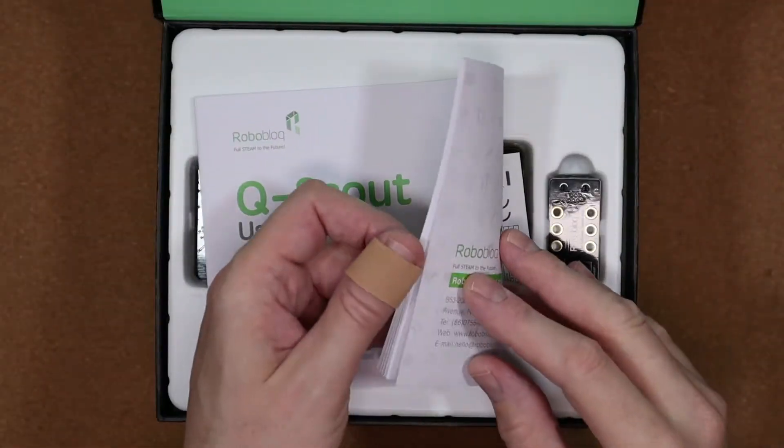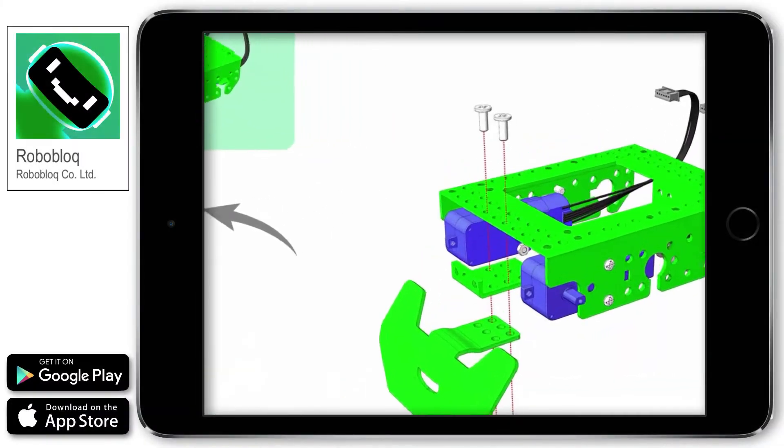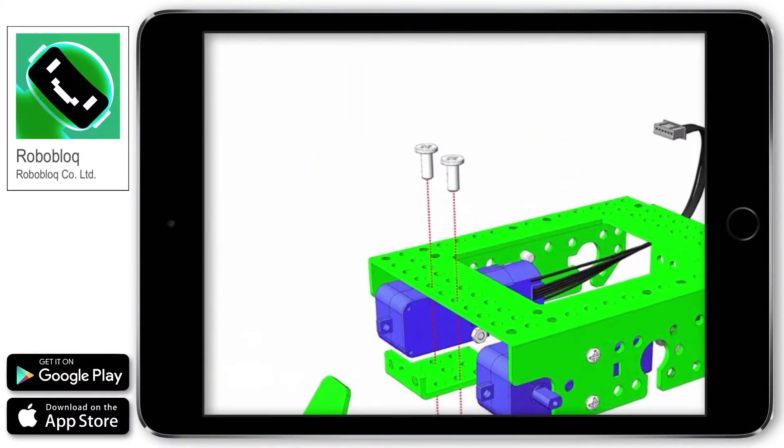Inside there's the manual with information about Q-Scout as well as the build instructions, but I always prefer to use the Roboblock app when building so that I can zoom into the diagrams.